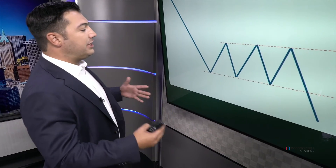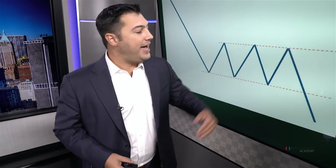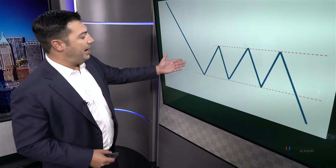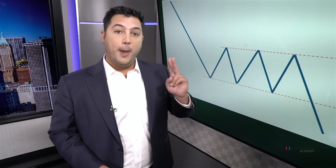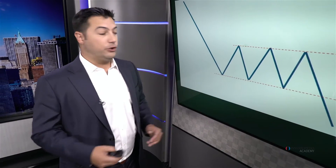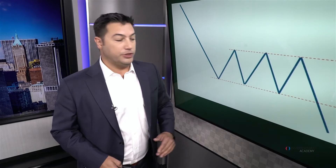Rectangles are also very common, though not as much as triangles because resistance and support need to be very clean. Again, the names of these patterns are less important — it's the implications we're looking for. Just like triangles, these rectangles are consolidations within the underlying trend. Here we have a downtrend, a consolidation in between two parallel trend lines rather than converging ones, and then once the lower boundary gets breached, that signals that the downtrend is now resuming.